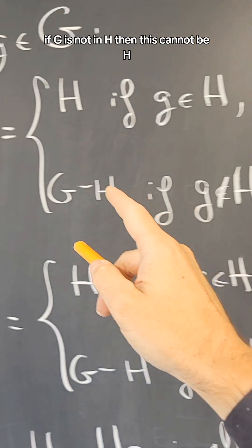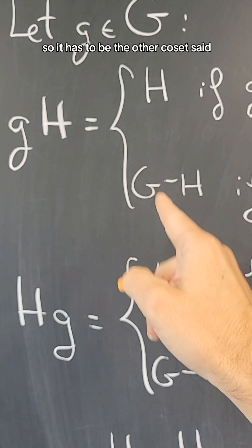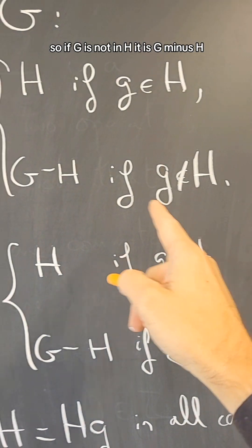Now, if g is not in H, then this cannot be H, so it has to be the other coset. So if g is not in H, it is G minus H.